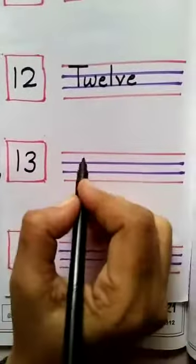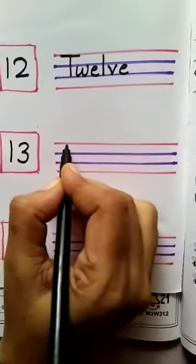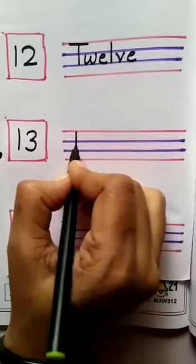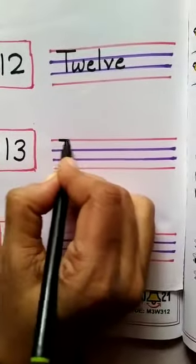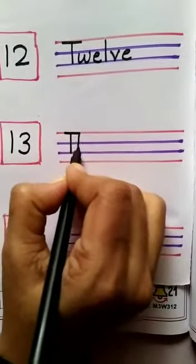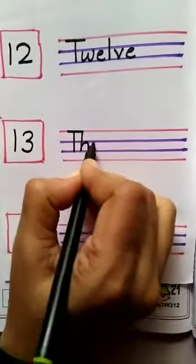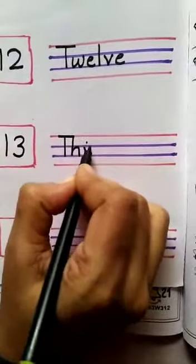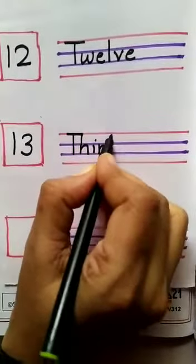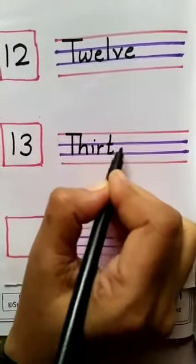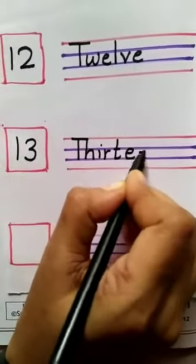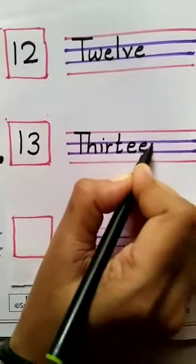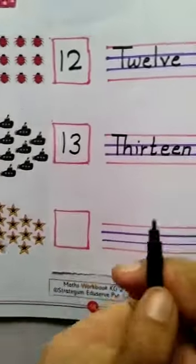Now we will write here the spelling: T, H, I, R, T, E, E, N. 13.